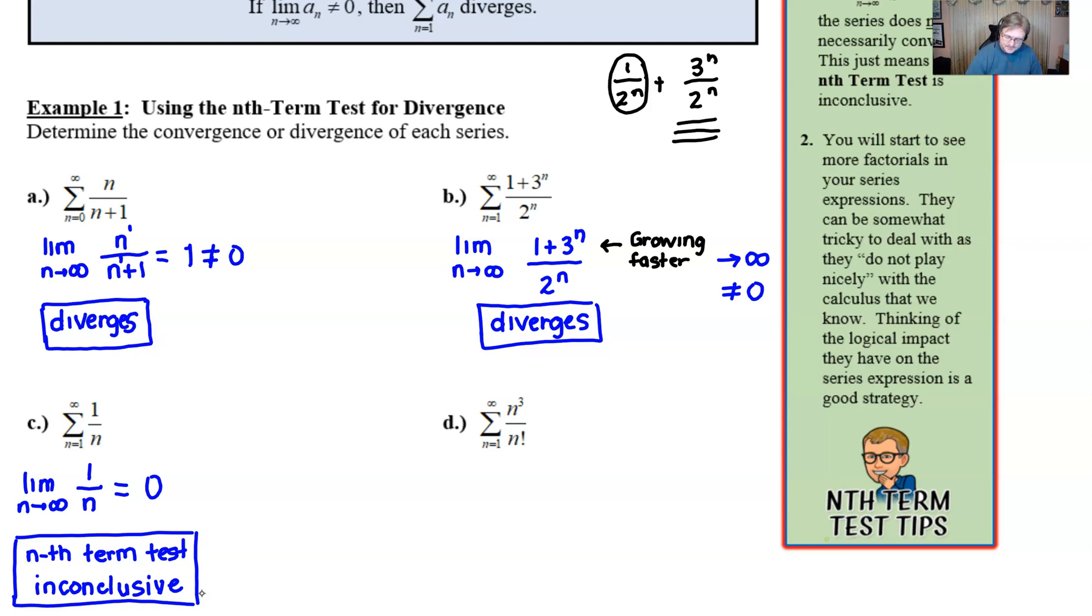All right, let's take a look at part d. For this guy, we're going to take the limit as n approaches infinity of n to the third over n factorial. Well, in my classroom the other day, we had a discussion with students about n factorial. We saw it for the first time in topic 10.1, and we realized that it doesn't work very well with calculus. You can't really take derivatives of it. You certainly have trouble with integrals and limits for that matter.